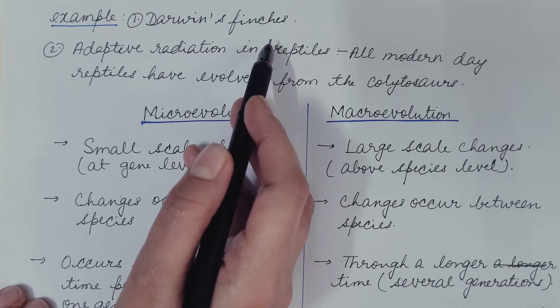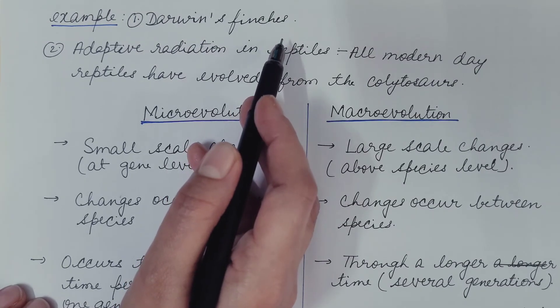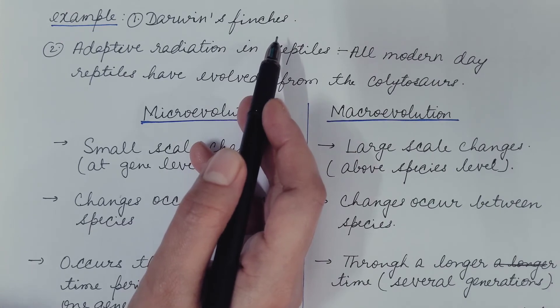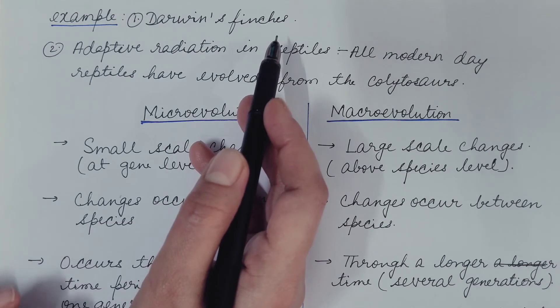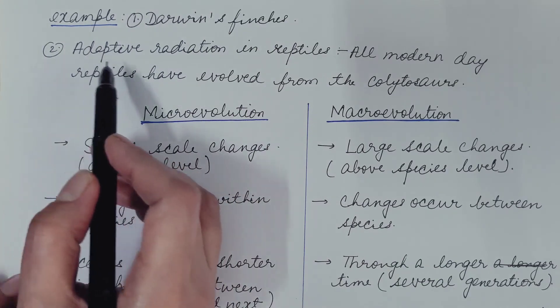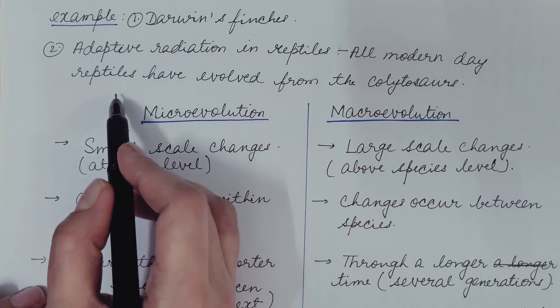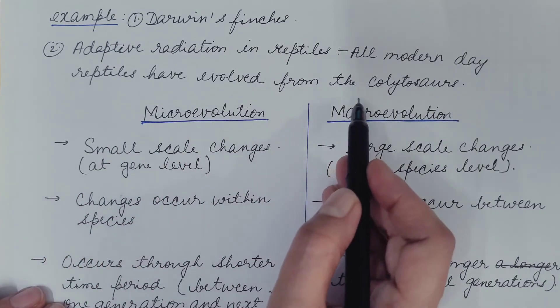And these adapted according to their different habitats. And different species had different structure of the beak depending upon their diet. Second, adaptive radiation in reptiles. All modern day reptiles have evolved from the Cotylosaurus.